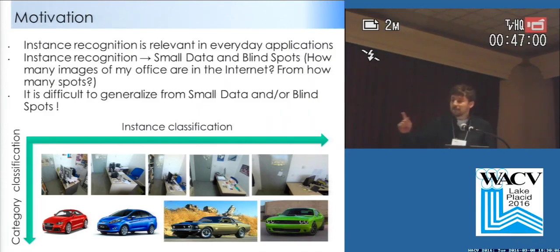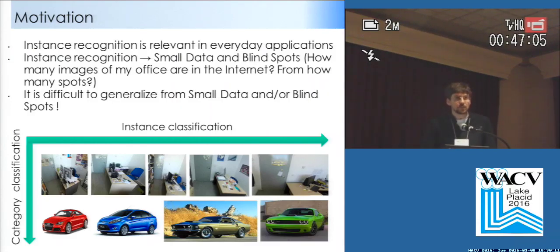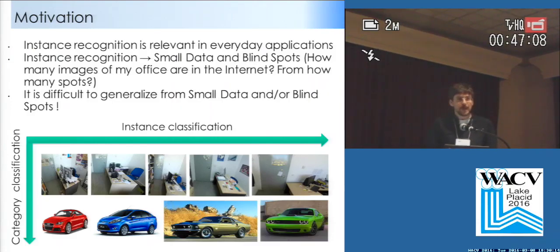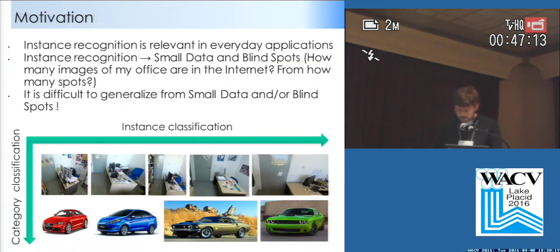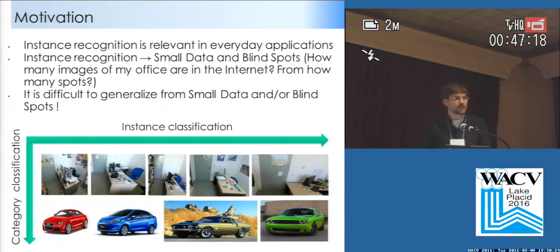For example, if I look in Google for images of cars and offices, I will have billions of them. But if I look for images of my office, there will be none — or maybe one or two from this paper. So this is a tough question, because most machine learning algorithms fail in these situations of small data and training blind spots.